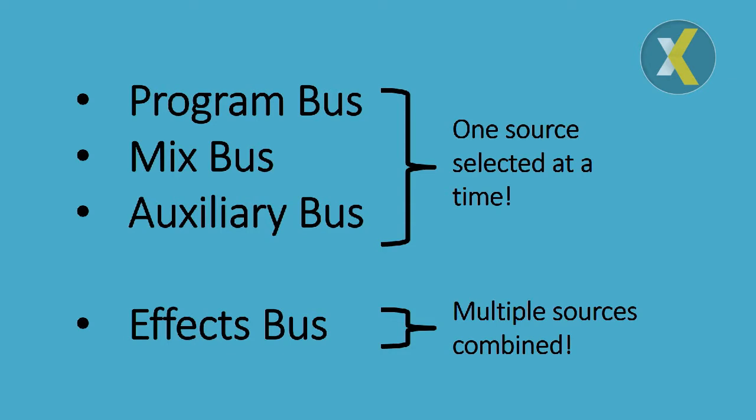The first three of them really act the same in that one source is selected at a time and that will be the output of the bus. The effects bus on the other hand can have multiple sources active at the same time, and the resulting video stream is the combination of these sources.